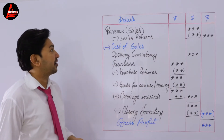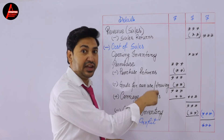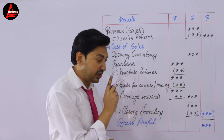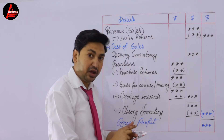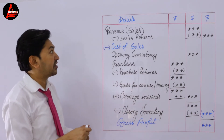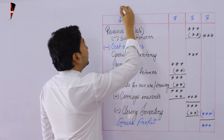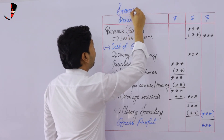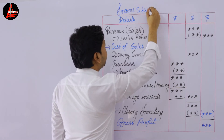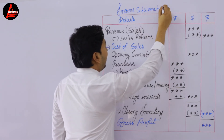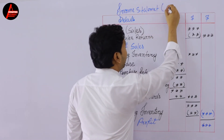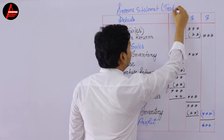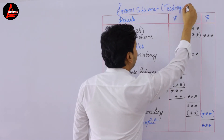Look at this layout — the format of an income statement. The first section of the income statement is the income statement, and in brackets you should write 'trading account.'